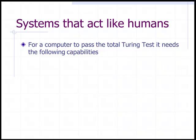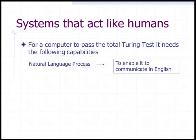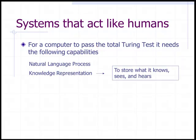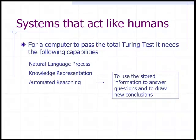For a computer to pass the total Turing test, it needs the following capabilities: natural language processing — the ability to enable a person to communicate with a computer in natural English; knowledge representation — the ability to store what a computer knows, sees, and hears; and automated reasoning — to use stored information to answer questions and draw new conclusions.